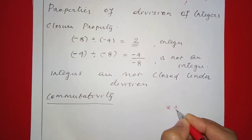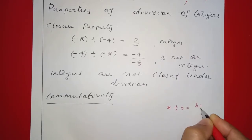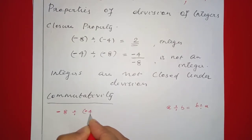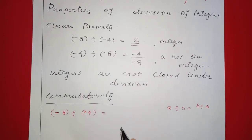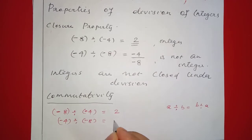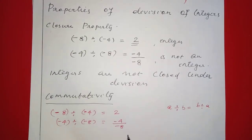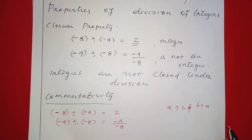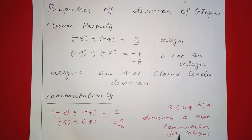The next property is commutativity. We check whether a divided by b equals b divided by a. For negative 8 divided by negative 4, the answer is 2. For negative 4 divided by negative 8, the result is 1/2. So a divided by b is not equal to b divided by a — division is not commutative for integers.